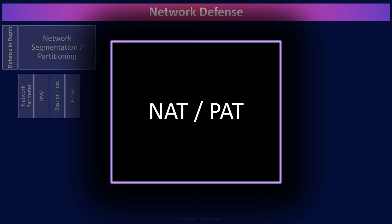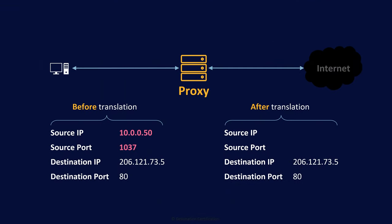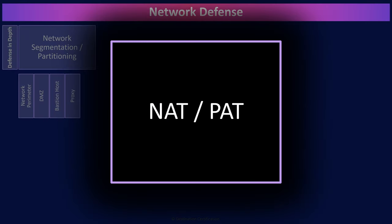NAT — network address translation — is a method of remapping an IP address to another by modifying the IP header of packets when they pass through a proxy. Typically, remapping from an internal, un-routable IP address to a publicly-routable IP address when a packet passes from inside the network out onto the internet. The proxy remaps any returning responses, changing the destination IP address on returning packets back to some internal system's IP address. PAT — port address translation — is exactly the same idea, except instead of changing IP addresses, the port number is remapped.